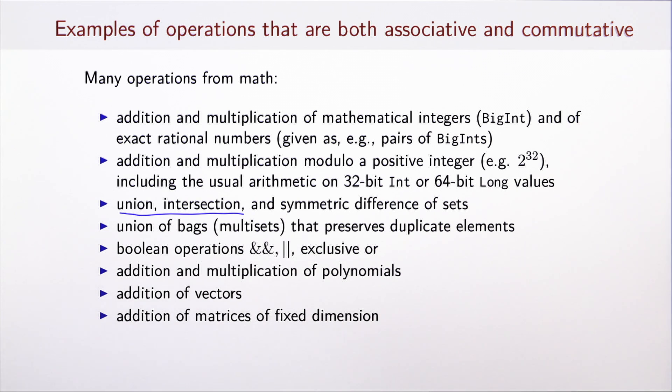When we manipulate collections, often the multiplicity of elements is also important, that is whether some element appears multiple times. We call such view of collections bags or multisets. When we perform an operation such as union of bags preserving the multiplicity of elements, that turns out to be also both commutative and associative. In logic, boolean operations such as conjunction, disjunction, or exclusive or are also both associative and commutative.